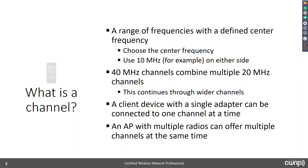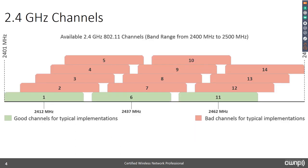Newer APs now have one radio that's configurable as either 5 GHz or 2.4 GHz, while the other is usually a static 5 GHz radio. That gives you an overview of what a channel is and some of the associated issues. Now let's talk about 2.4 GHz channels.